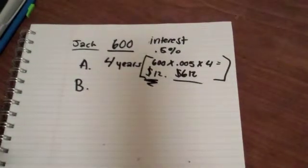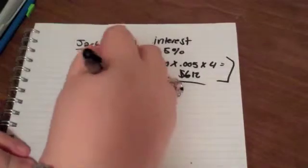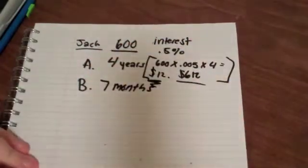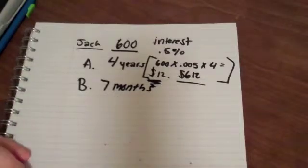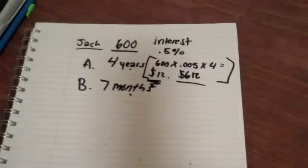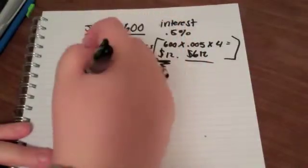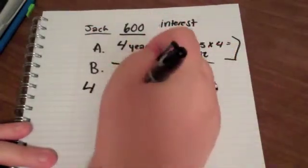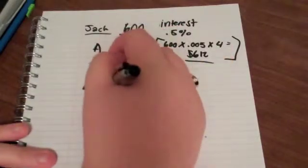Okay, the next problem says, how much will he have earned in seven months? Right? Now you notice the difference between these two is that this one's in years and this one's in months, and you want to put everything in years in this scenario anyways. So that one was fine for four, and in this one you would do what? And all the kids are like, 12! Yeah, good job.